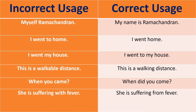When introducing yourself, 'myself and the name is' is wrong. Correct forms are 'my name is Ramchandran' or 'I am Ramchandran.' 'I went to home' is wrong — correct: 'I went home.' 'This is a walkable distance' is wrong — correct: 'this is a walking distance.' 'When you came' — in question context: 'When did you come?' 'She is suffering with fever' — correct: 'she is suffering from fever.'